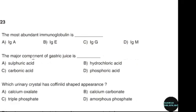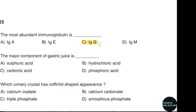Most abundant immunoglobulin is — correct answer option C: IgG. The major component of gastric juice is — correct answer option B: Hydrochloric acid.